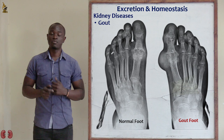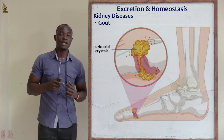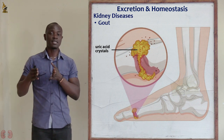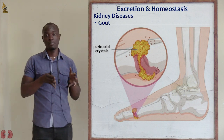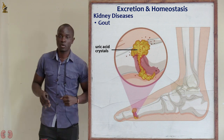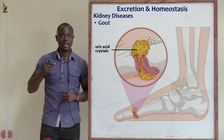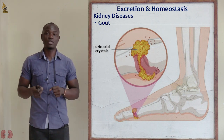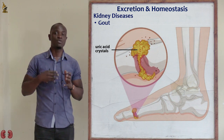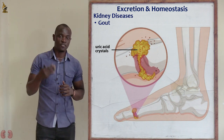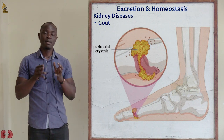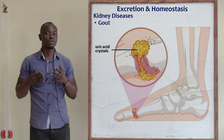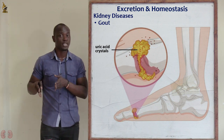Uric acid is formed by the breakdown of excess proteins in the body, which causes it to be deposited on the joints. Since uric acid is an acid, if it is deposited on the joints, it will start to burn the tissues found on that joint. The burning of these tissues causes a lot of pain and can also cause impairing of movement.